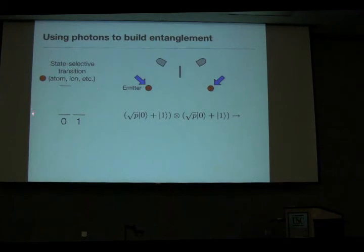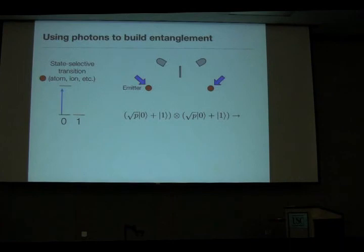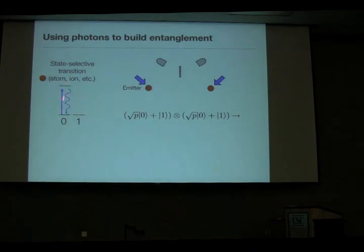The simplest example is some atom, ion, or other emitter with two metastable states labeled zero and one — the qubit states — and an excited state where, under the particular choice of laser excitation, polarization, and frequency, zero is excited but one is not. With a laser pi pulse, I can create population from zero, move it to the excited state, and then it will decay with the emission of a photon.